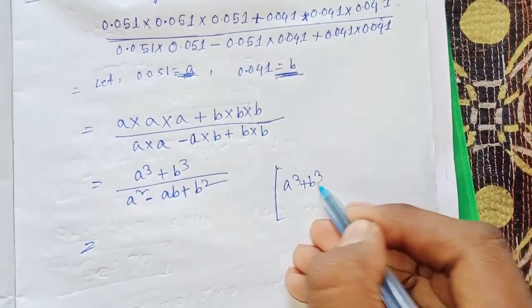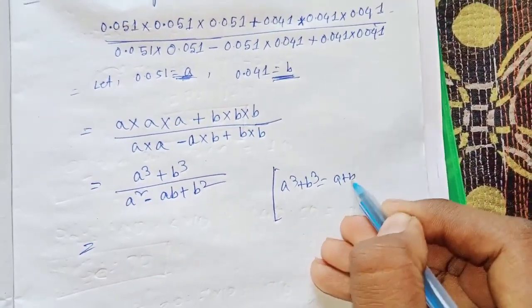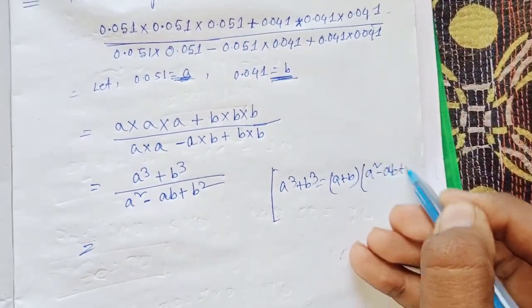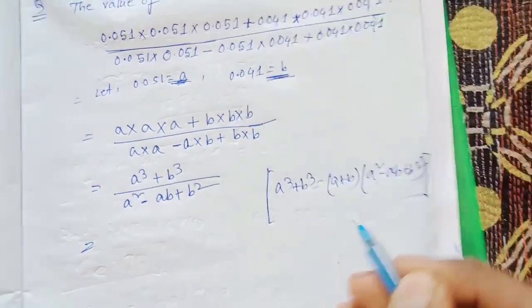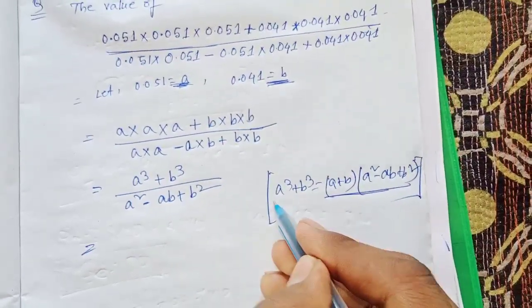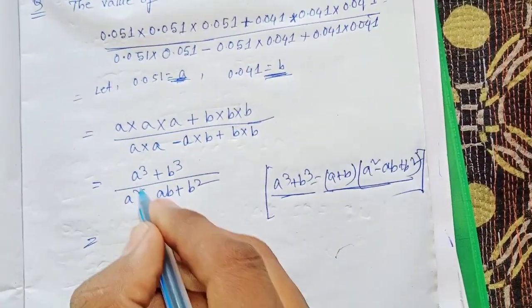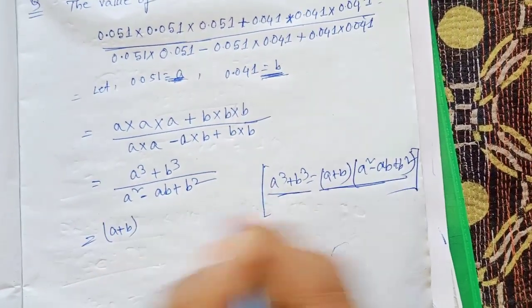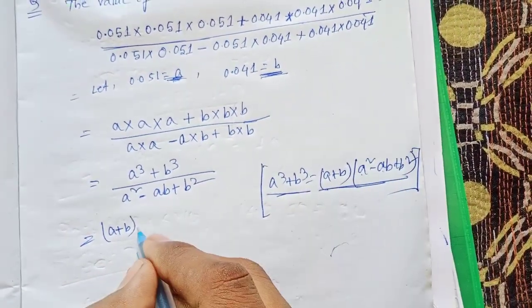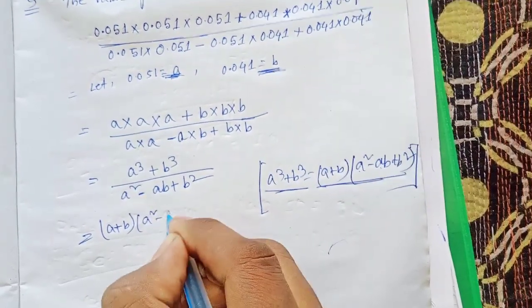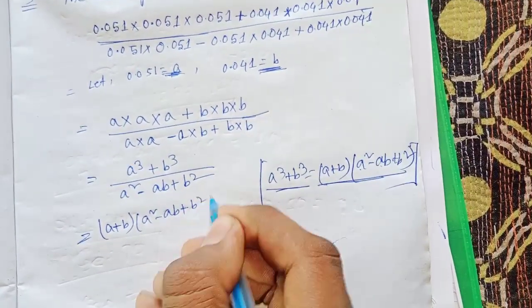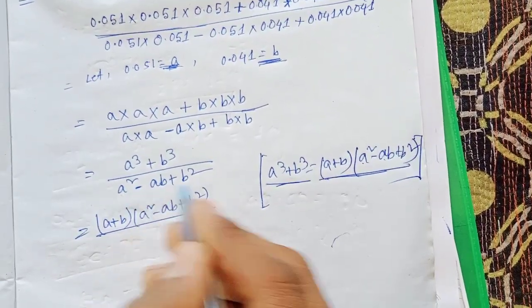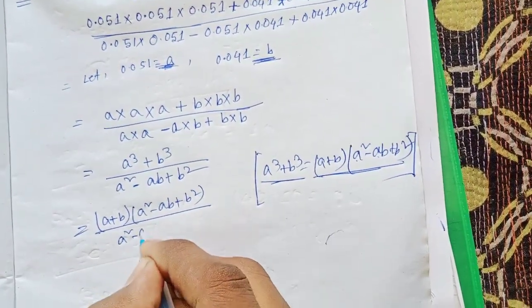Now, the formula for a³ + b³ equals (a + b)(a² − ab + b²). We apply this formula: a³ + b³ in the numerator becomes (a + b)(a² − ab + b²), over the denominator a² − ab + b².